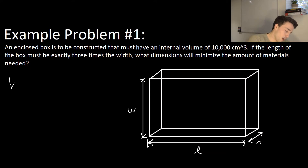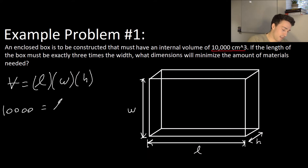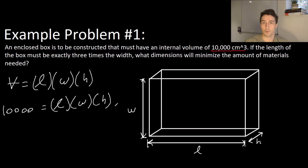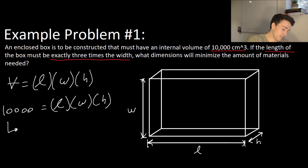The volume of a box is just length times width times height, and we're saying that it needs to be 10,000 centimeters cubed. So we write 10,000 equals length times width times height. That's our constraint function, but we need to specify what some of the dimensions are. We're told the length is exactly three times the width, so we can write L equals 3W.